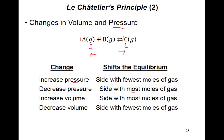Increasing volume means decreasing pressure, so the system goes toward the side with the most moles — that would be reverse. Decreasing volume means increasing pressure, so the system goes toward the fewest moles — that is the forward direction. In your problem, first remove pure solids and pure liquids from the equation, leaving only gases, and then count the moles.